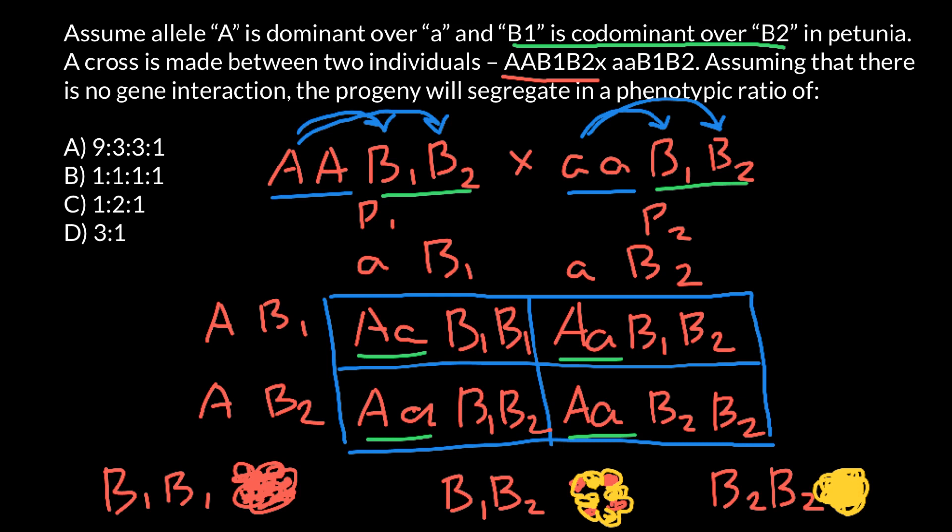For example, B1, B1 would make tall plants and flowers going to be red. And for example, genotype that is here, B2, B2 would produce tall plants whose flowers are going to be yellow. And genotype which is here would produce tall plants and flowers going to be red and yellow. So red and yellow, and also here, red and yellow.